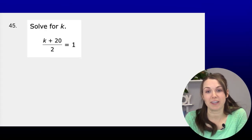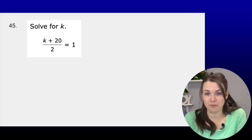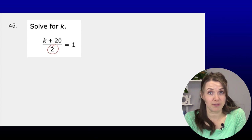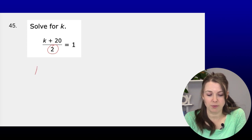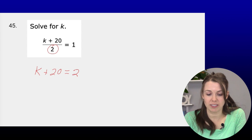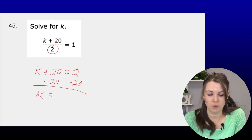Finally, solve for K in the equation K/2 + 20 = 1. To get rid of the denominator, multiply both sides by 2, giving K + 20 = 2. Then subtract 20 from both sides: K = −18.